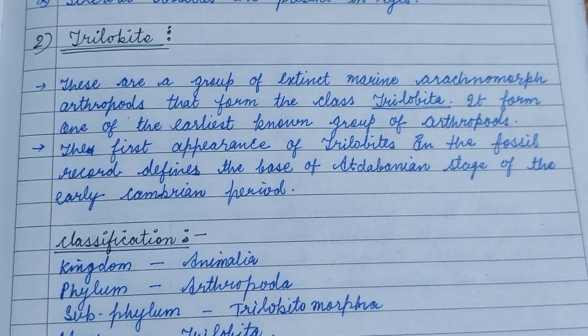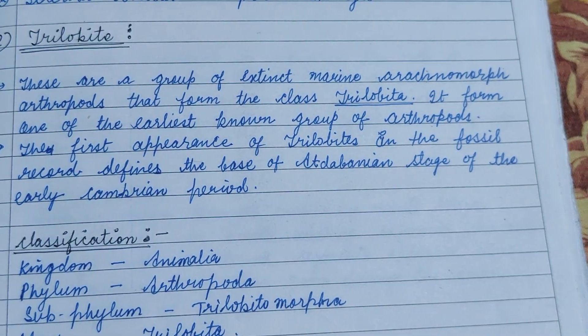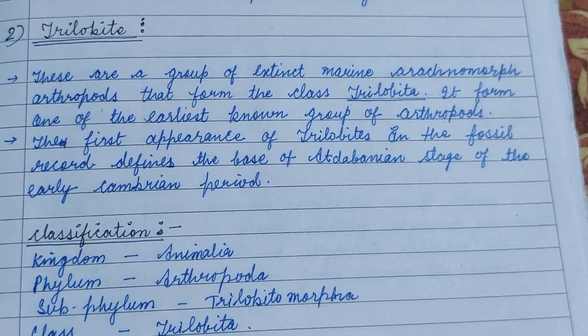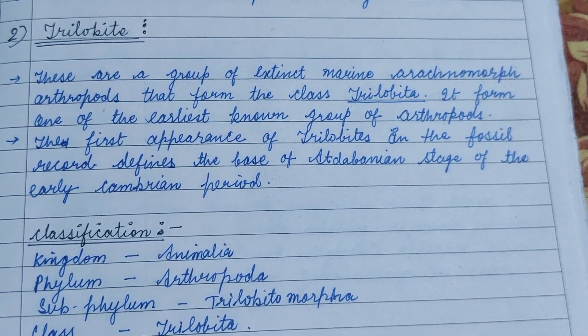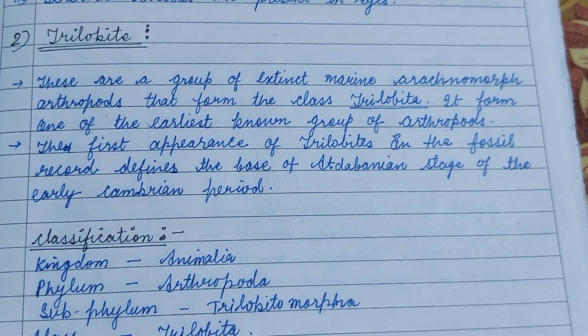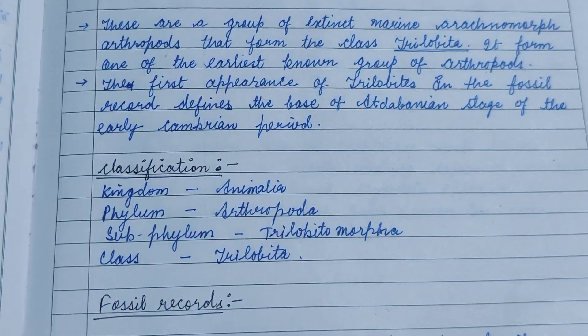Trilobites are a group of extinct marine arthropods that form the class Trilobita. They form one of the earliest known groups of arthropods.